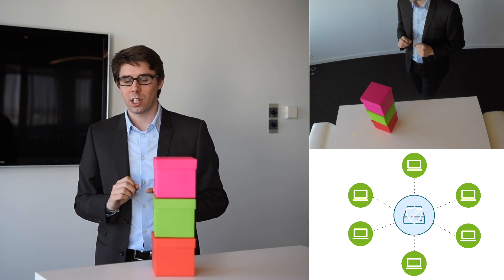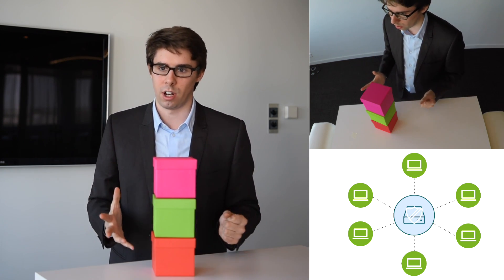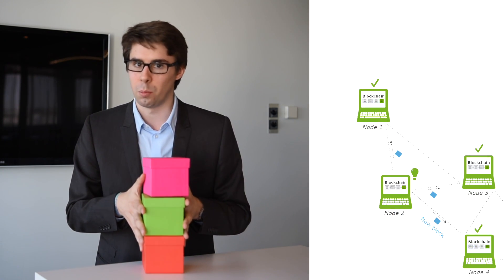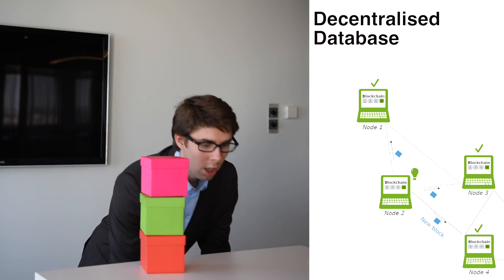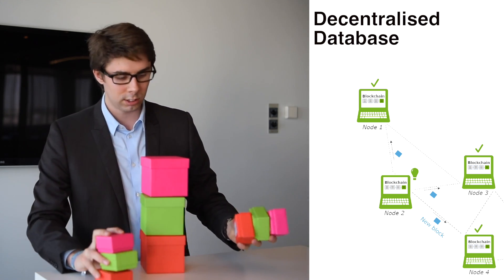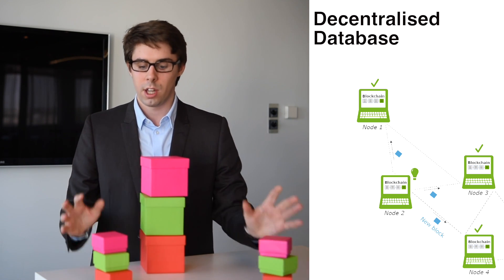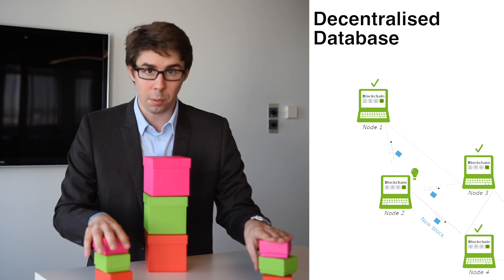So I mentioned that blockchain or Bitcoin was decentralized. So how does that work in the blockchain? So you have your blockchain here. But actually, you don't have only one blockchain. You have multiple blockchains that sit on every node of the network. And those blockchains are exact duplicates.